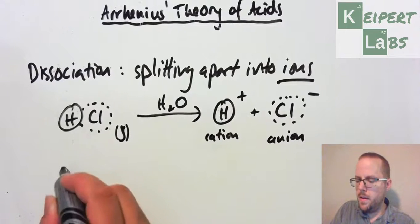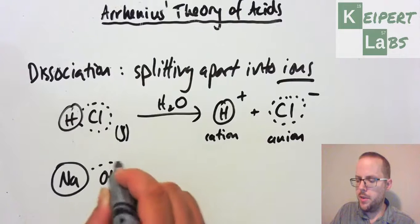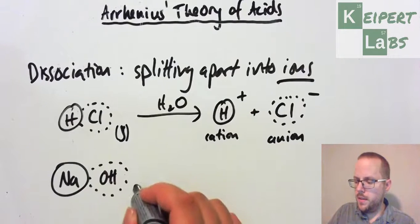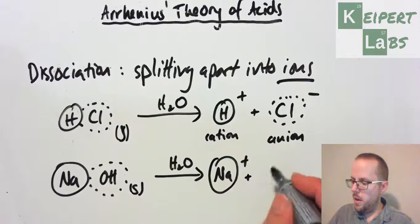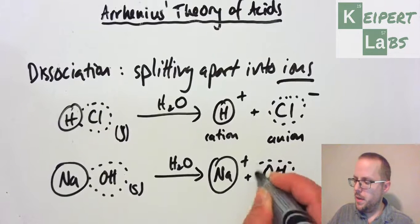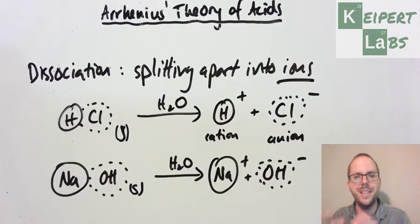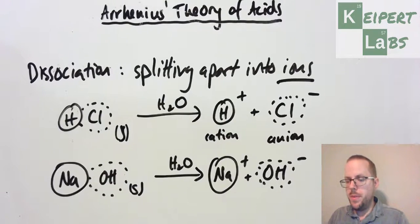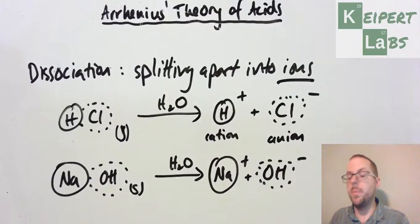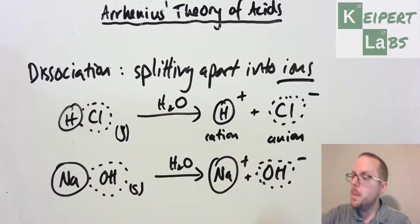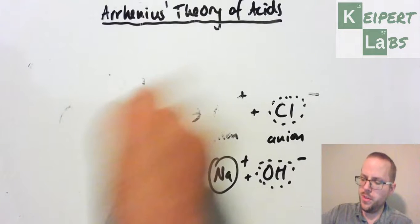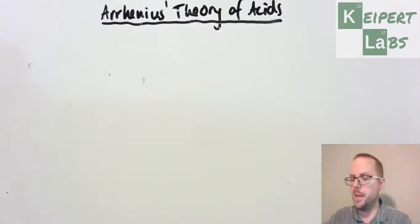Same sort of thing if I had Na and then my OH combination, my hydroxide combination, as a solid. We place it in water and we end up with our sodium, which is a positive chunk, and our hydroxide, which is a negative chunk. That's dissociation, this idea of taking something that was combined and it's splitting apart. That's key to this theory, that the water molecule is surrounding those particles and helping to pull them out of the bigger structure to become separate.